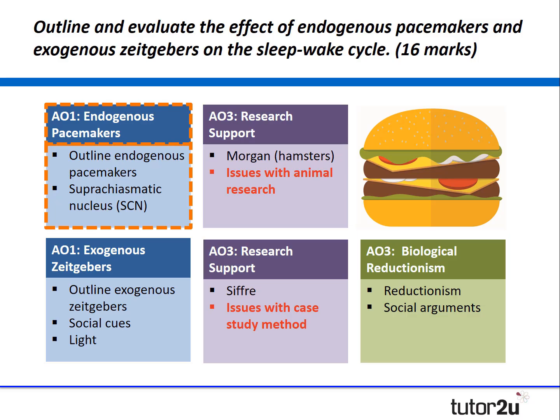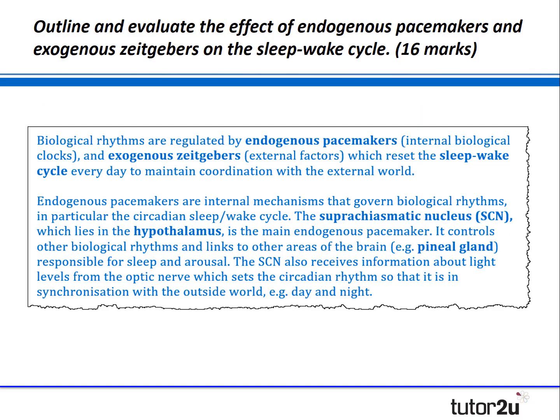Let's look at how we might outline endogenous pacemakers. The key to a 16-mark essay is a short, concise but accurate outline of knowledge. You might start with something like: biological rhythms are regulated by endogenous pacemakers — the internal biological clocks — and exogenous zeitgebers, the external factors which reset the sleep-wake cycle every day to maintain coordination with the outside world.